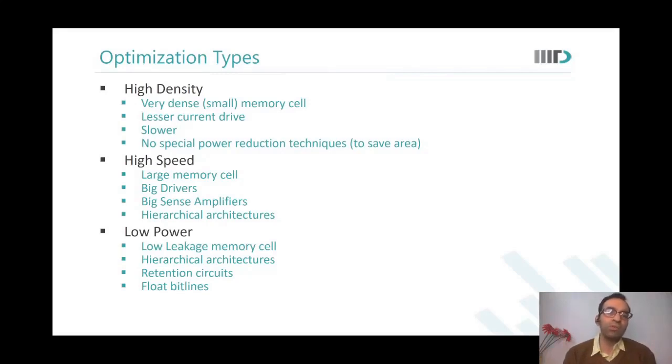If you want a high density memory, you will use a very dense memory cell. Because it's very dense, the devices are small, so the memory cell current is going to be low. Current is low means you are slower. And because any additional features means more area, you may not have any additional features there.